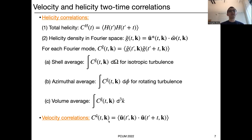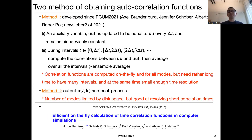Velocity correlations are computed in a similar straightforward way with the same kinds of averages. Since this is the Pencil Code meeting, I want to briefly mention how we compute these correlation functions in the code. There are basically two methods. The first method was developed since the last user meeting, and we thank Axel, Jennifer, and Alberto for their help in developing this technique.